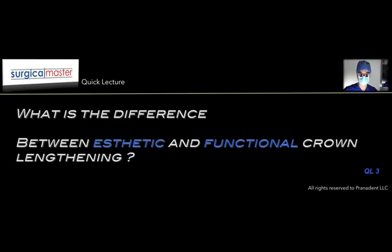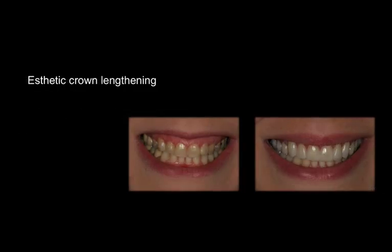We're dealing with two resective procedures that involve removal of soft tissue — a gingivectomy — or removal of supporting bone, that we call ostectomy. When we talk about aesthetic crown lengthening, we are trying to improve teeth proportions and also reducing the gingival display if this is a problem, so the gummy smile is definitely improved.